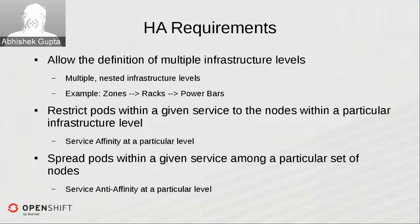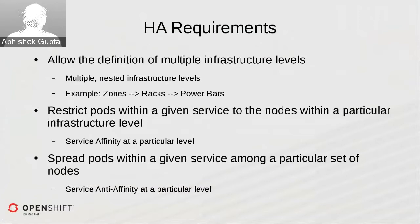Some of the requirements we began with for HA in the scheduler: we wanted the ability to define multiple infrastructure levels — things like zones, racks, power bars — which are completely flexible and can be nested. We also wanted the ability to restrict all pods belonging to a particular service within a particular infrastructure level. If an application has low latency requirements, you don't want them spanning great distances; you'd want them within the same rack or zone. You can specify this at any level or at multiple levels.